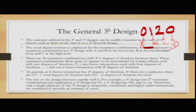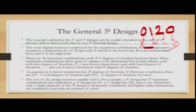These treatment combinations allow sum of squares for k main effects each with 2 degrees of freedom, k-choose-2 two-factor interactions each with 4 degrees of freedom, and higher-order interactions with 2^k degrees of freedom. With n replicates, the total degrees of freedom are n × 3^k minus 1, with error degrees of freedom being 3^k times (n minus 1). The sum of squares of all factors plus errors equals the total sum of squares.